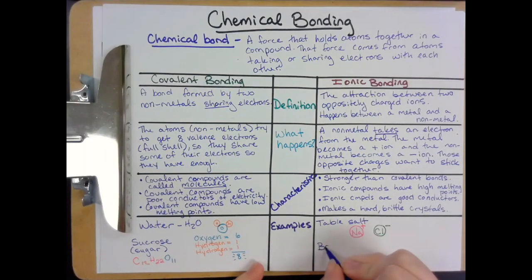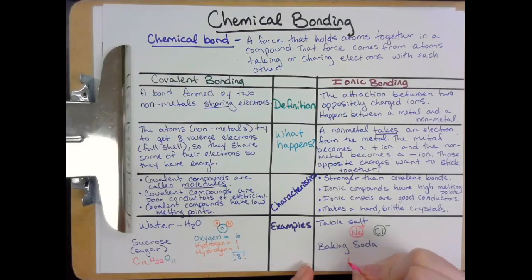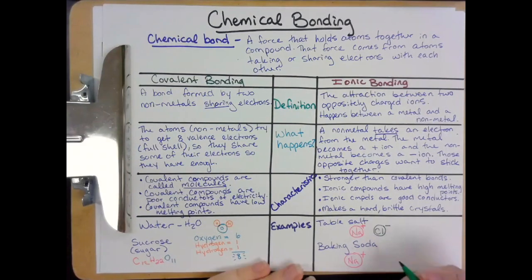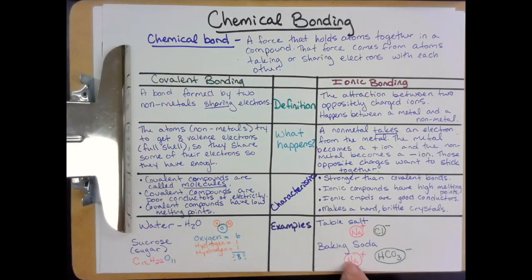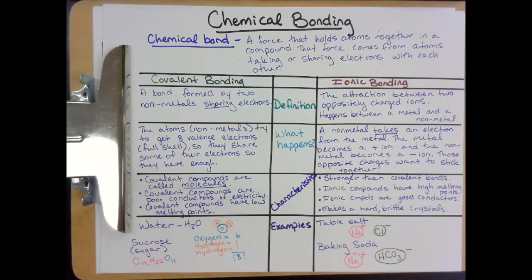Another example of an ionic bond you might find in your kitchen is baking soda. Baking soda also has a sodium atom in it — another Na, another alkali metal. You've got an HCO3 group — hydrogen, carbon, and oxygen — a whole nonmetal molecule that steals the electron away from the sodium. The metal becomes positive when its electron is snatched away; the nonmetal becomes negative because it has extra electrons. Those positive and negative charges attract each other and want to stick together.